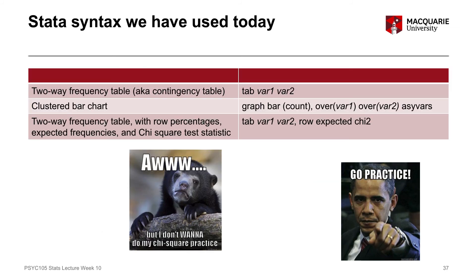The next slide is a summary of the Stata syntax used today. The two-way frequency table, our contingency table, uses the tab or tabulate command. There's also the clustered bar chart, which represents the same data from the two-way frequency table. Getting the Pearson's chi-square test of independence is an extra bit of output from that frequency table command.